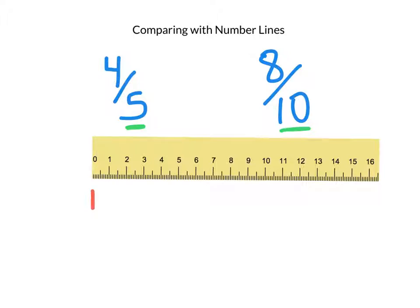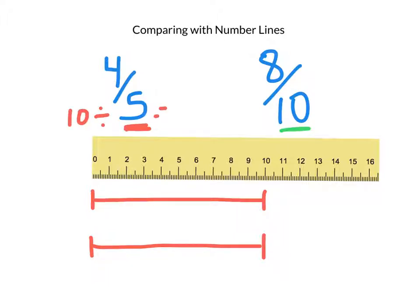So I'm going to make two congruent number lines 10 centimeters in length. They have the same starting point and the same finishing point. Alright, now since I'm dividing into fifths, into 5 sections, 10 centimeters divided by 5 is 2. So every 2 centimeters, I'm going to make a mark: 2, 4, 6, 8, and then 10. Perfect. Now I have 5 equal sections.